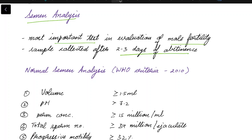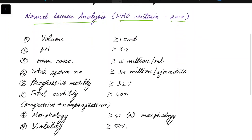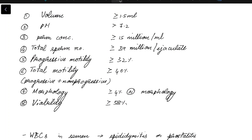Now let us see about normal semen analysis parameters according to WHO criteria of 2010. The volume of semen should be greater than or equal to 1.5 milliliter. Anything less than this might indicate blockage. The pH should be greater than 7.2.